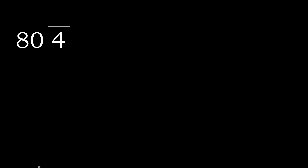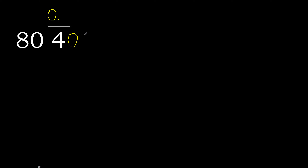4 divided by 80. 4 is less, therefore complete — always complete with 0 here: 0 point. 40 is less, therefore complete: 0 0 point. 400 is here. 400 is not less, therefore with 400: 80 multiplied by which number is nearest to 400 but not greater?